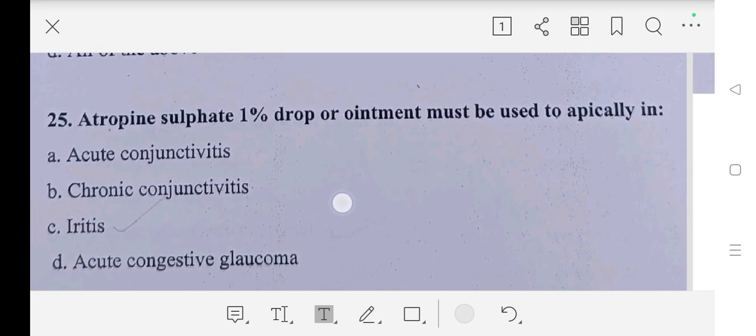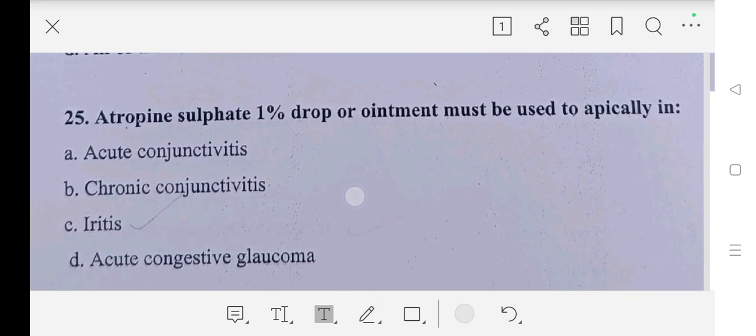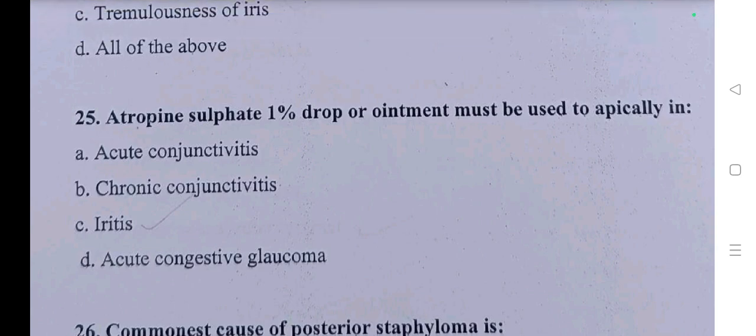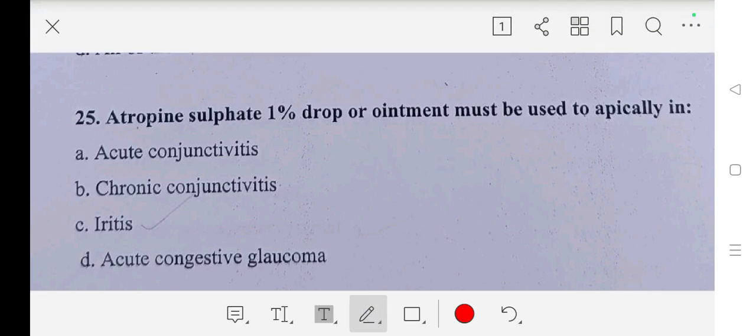Question number twenty-five: atropine sulfate 1% drop or ointment should be used topically in — A part: acute conjunctivitis, B part: chronic conjunctivitis, C part: iritis, D part: acute congestive glaucoma. Our answer is iritis.